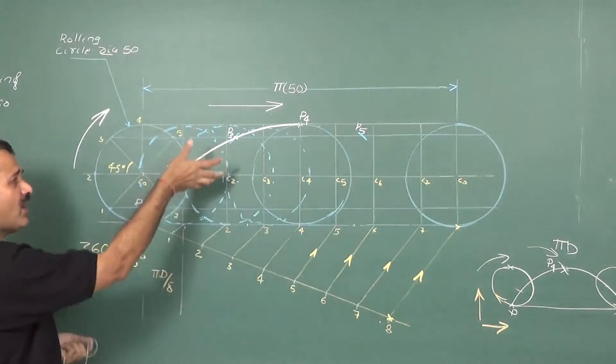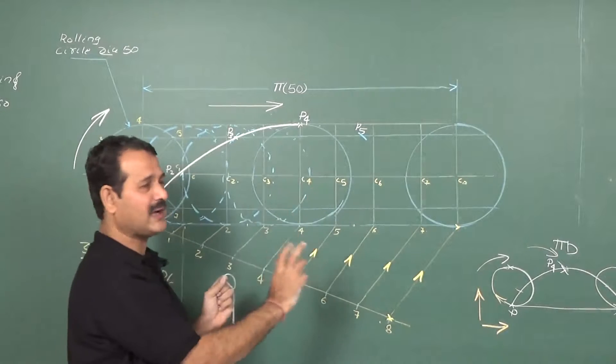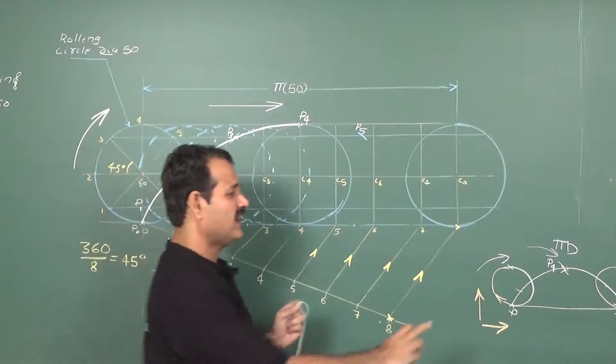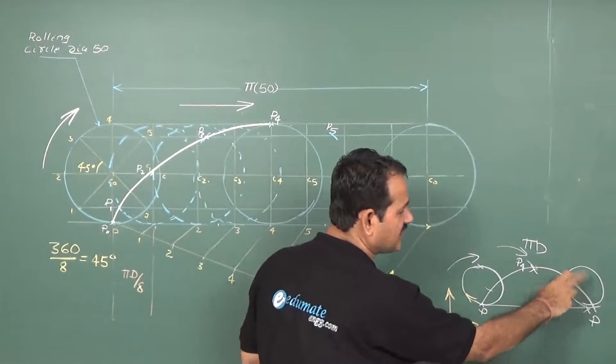While cutting the arcs here towards left, I am cutting the arcs towards left. When drawing the curve on the right, I have to cut arcs towards right. The reason is the point has reached the highest point. Now the point has to fall downwards in this direction.